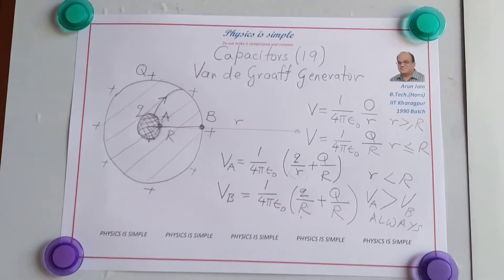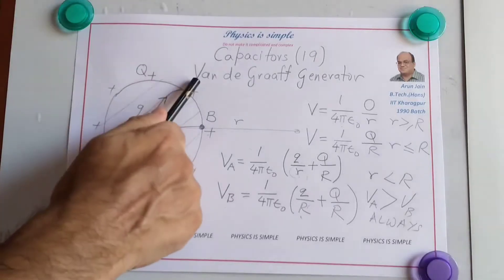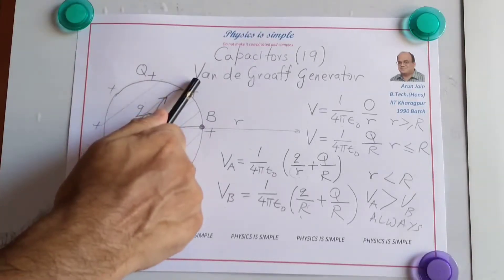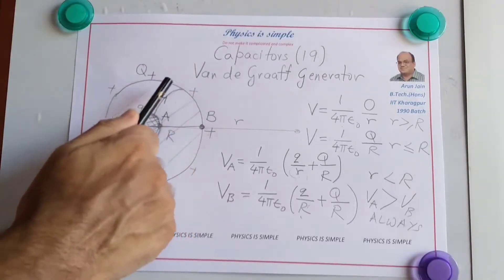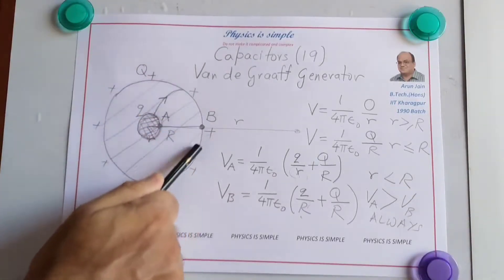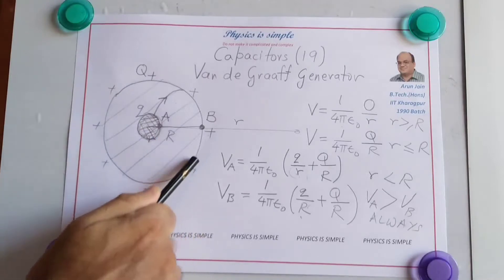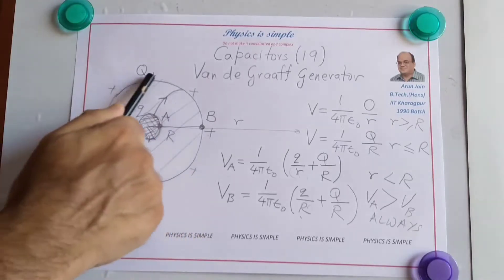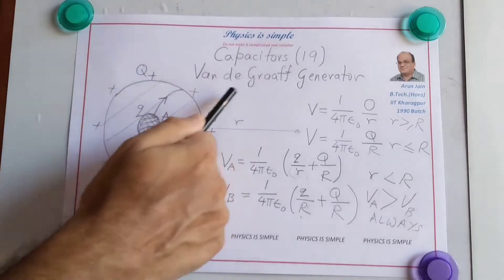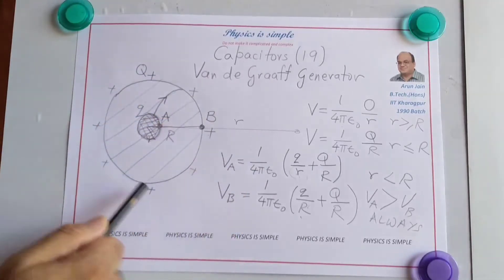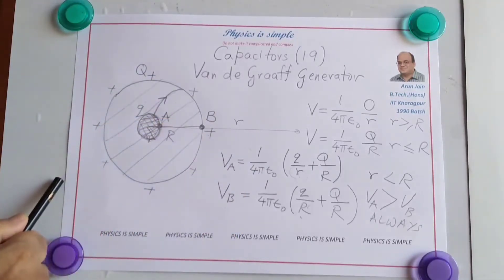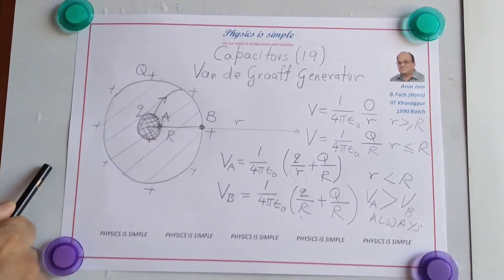This is the principle of working of a Van de Graaff generator. Charge will always flow from inner to outer. But after the breakdown potential is reached, the outer shell will not be able to hold any more charge — the charge will leak out to the atmosphere.